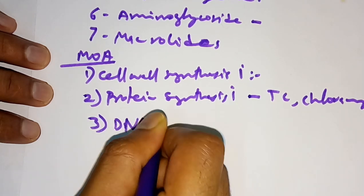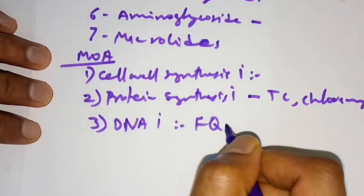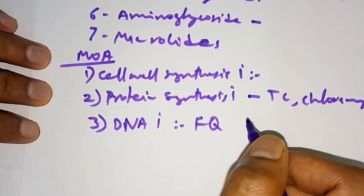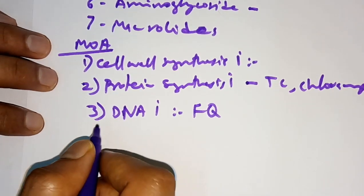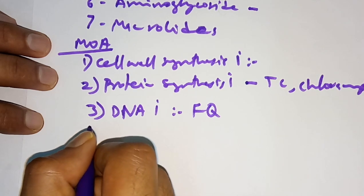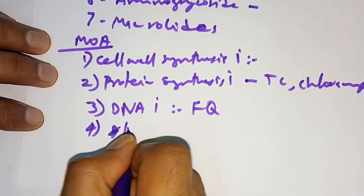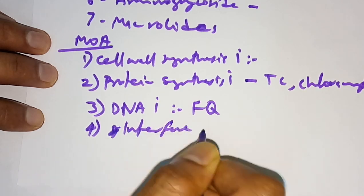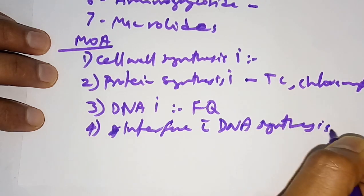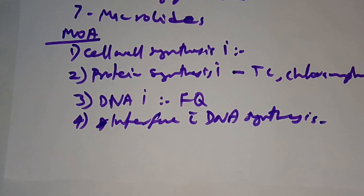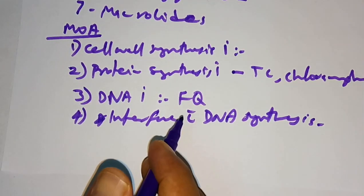Third are DNA gyrase inhibitors — the example is fluoroquinolones, such as ciprofloxacin. Fourth are drugs that interfere with DNA synthesis — examples include antiviral drugs acyclovir and zidovudine, which come under this category.